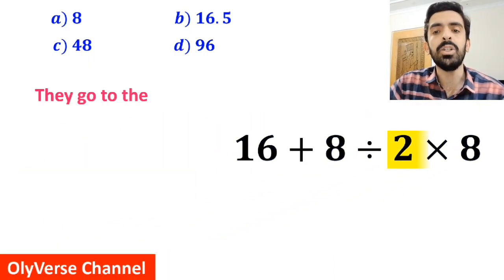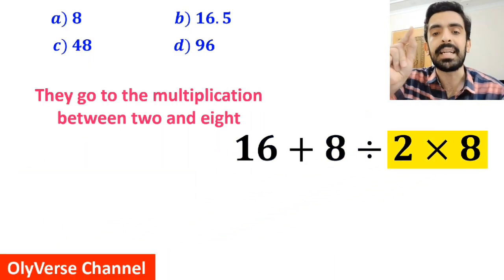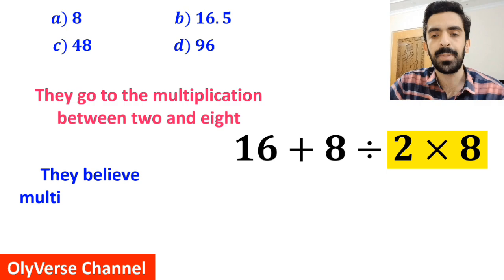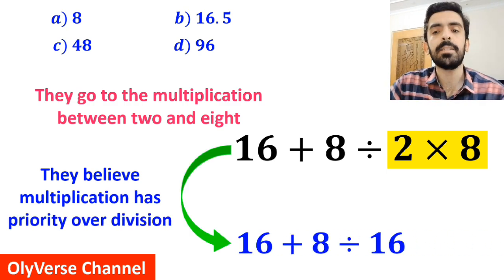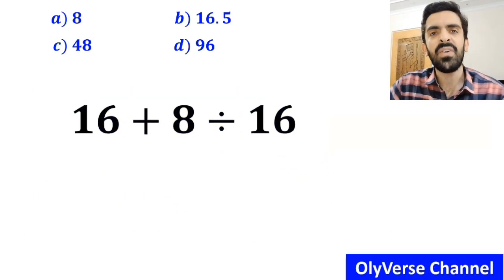In the next step, they go to the multiplication between 2 and 8 because they believe multiplication has priority over division. So, they simplify this expression to 16 plus 8 divided by 16.